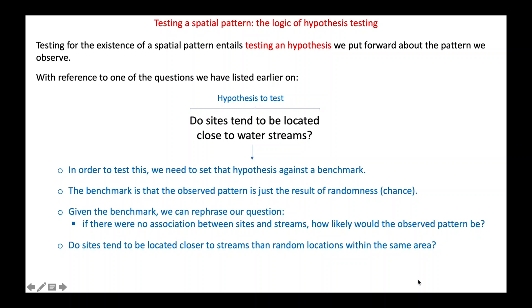To test for a spatial pattern, we have to engage with what is called hypothesis testing. According to the logic of hypothesis testing, if we want to ascertain, for instance, if there is a spatial association between some sites and water streams, we have to find a formal way to calculate the probability of observing the pattern we see in our data if there were no association between sites and streams. The hypothesis of no association against which we set our observed pattern is called the null hypothesis.